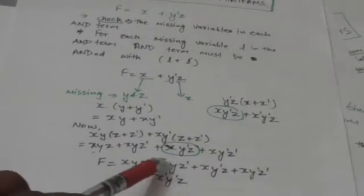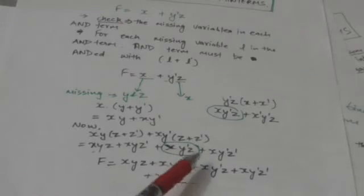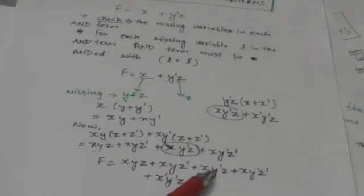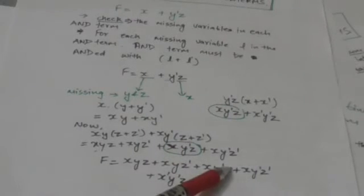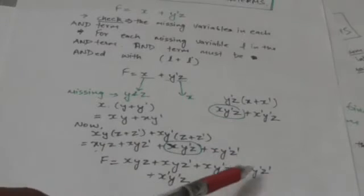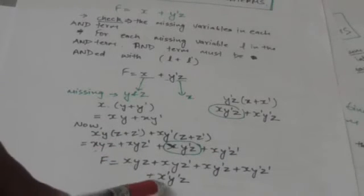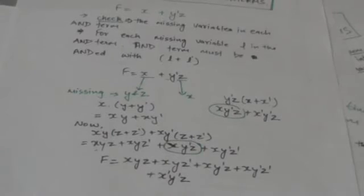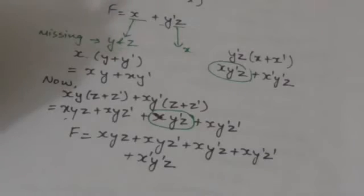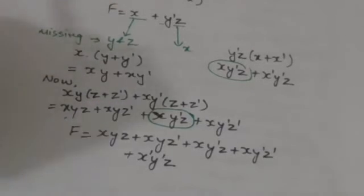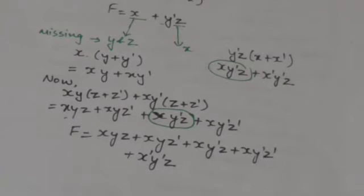So function f becomes: xyz + xyz' + xy'z + xy'z' + x'y'z. In this way we can express any boolean function as a sum of minterms.